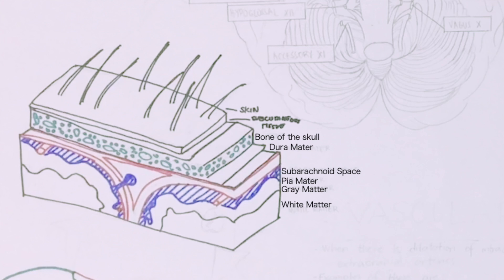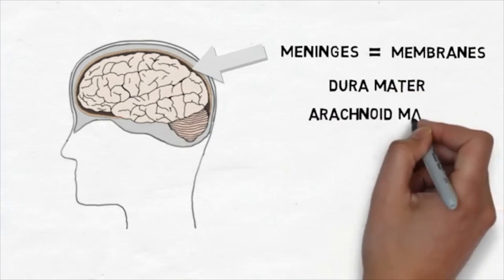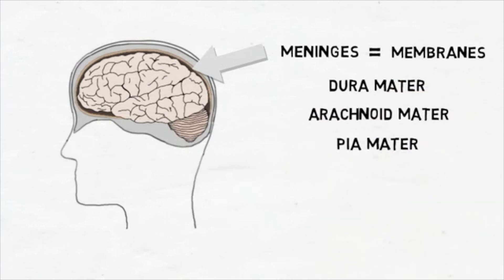Now inside, the brain is surrounded by three protective membranes, or meninges: the dura mater, the arachnoid mater, and the pia mater.